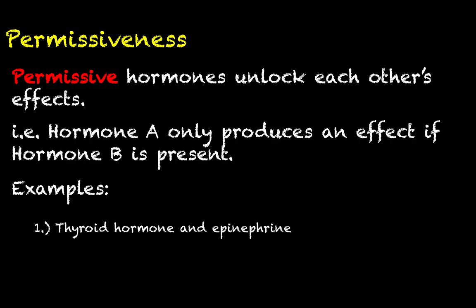Some examples of permissiveness to consider: thyroid hormone and epinephrine. When we talk about the thyroid and how thyroid hormone synthesis and secretion works, you'll need to operate under the assumption that thyroid hormone is only really going to do its job if epinephrine is present too. We'll also talk about epinephrine later when we get to chapter 15.